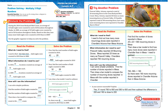Let's try another problem before you do some on your own. Prescott Valley, Arizona reported a total of 29 morning doves in the Great Backyard Bird Count. Mesa, Arizona reported 20 times as many morning doves as Prescott Valley. If Chandler reported a total of 760 morning doves, how many more morning doves were reported in Chandler than in Mesa?